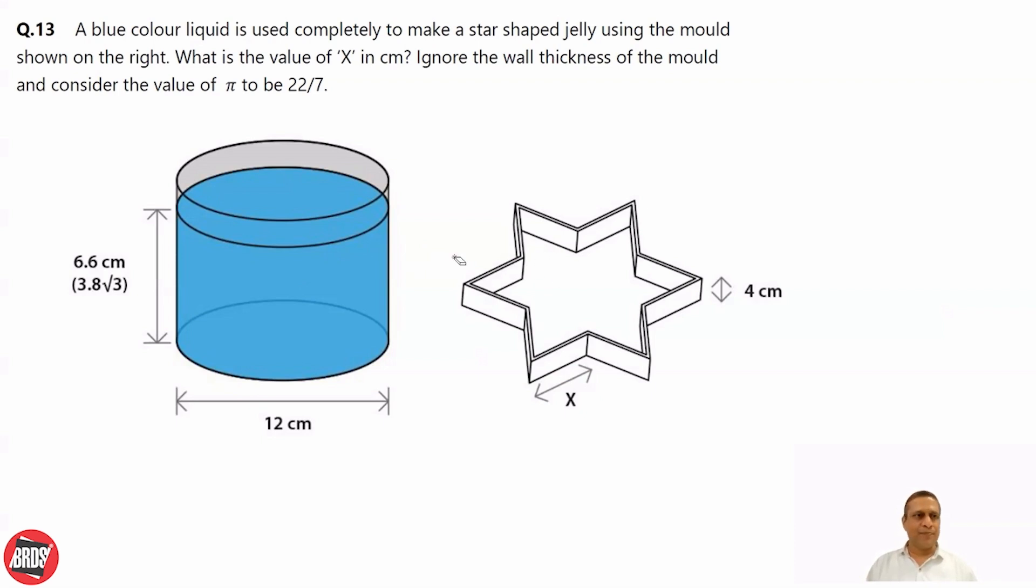There is a kind of prism. What is the value of x in centimeter? What is x? X is this length. Ignore the wall thickness of the mold. So this thickness and this thickness we need to ignore. And consider value of pi 22 by 7.